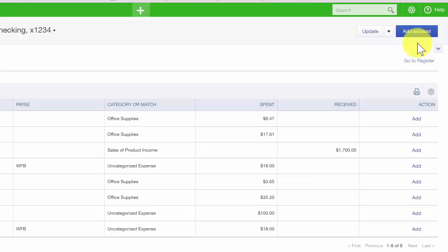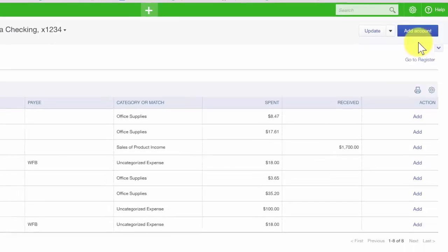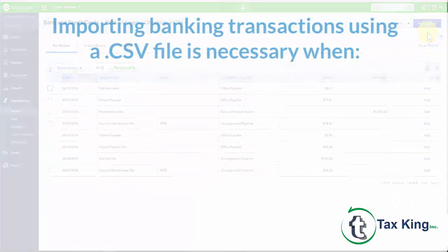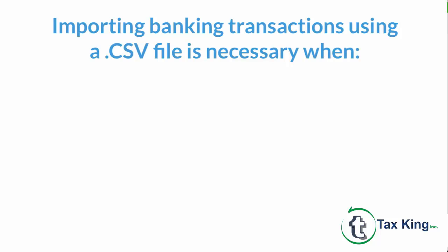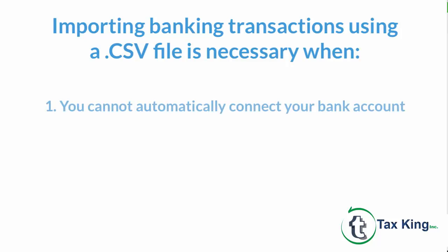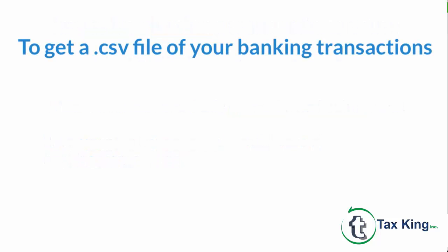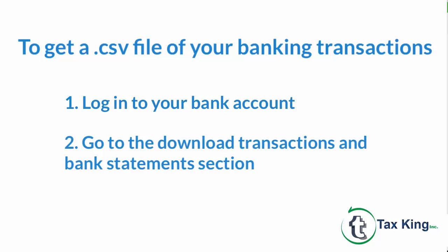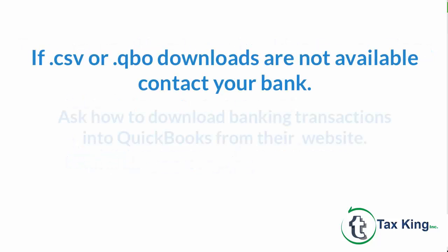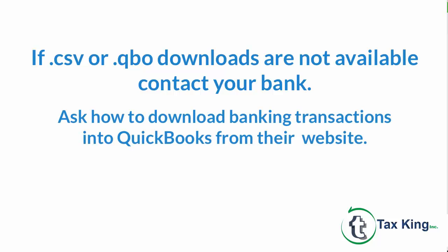That's it for how to automatically connect a bank account to QuickBooks Online. Now, when to import banking transactions using a CSV file: if you were not able to automatically connect your bank account to QuickBooks, or if you need to download more than 90 days of banking transactions, it is important to understand how to import transactions using an Excel format called CSV. To obtain this type of file, log into your bank account and go to the section where you can download transactions or bank statements. Most likely you will have the option to download in multiple formats. If you don't see CSV or QBO options, contact your bank and let them know you'd like to download transactions into QuickBooks.